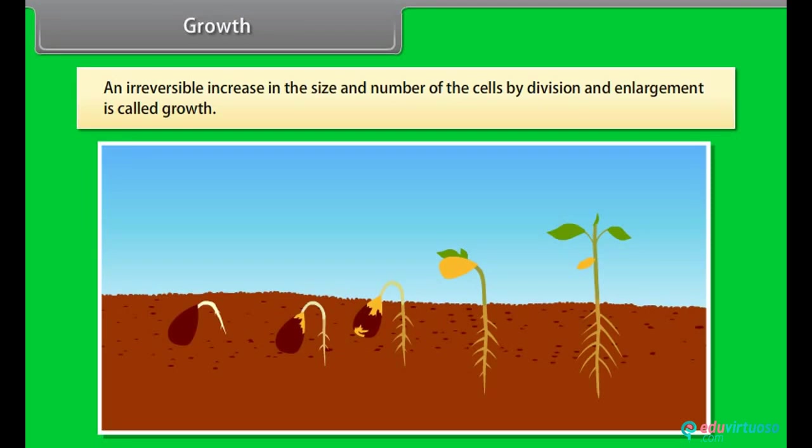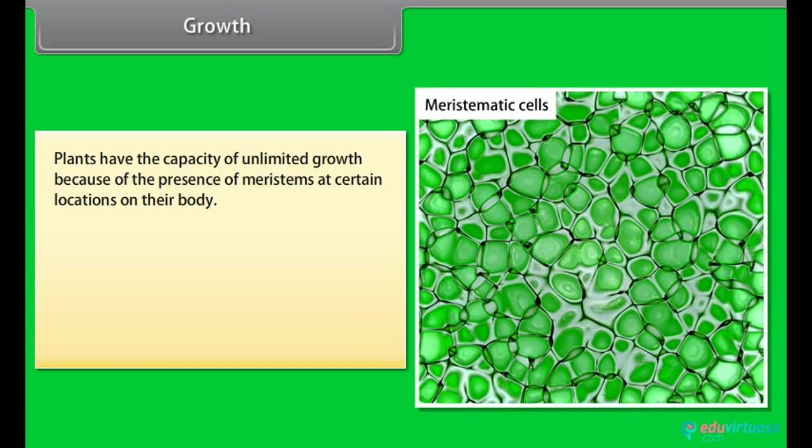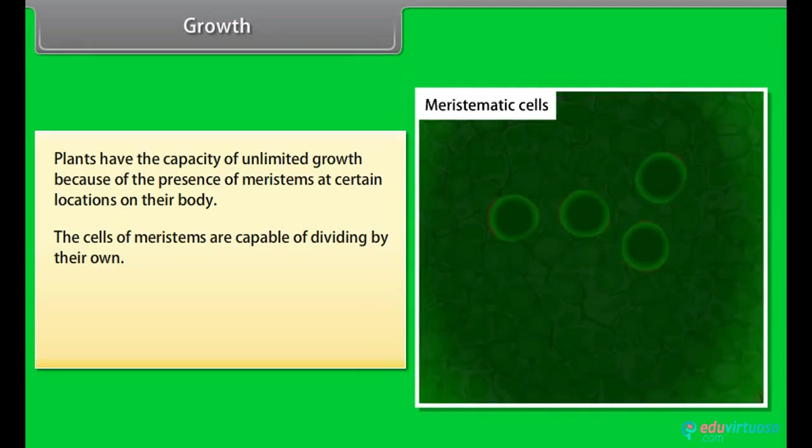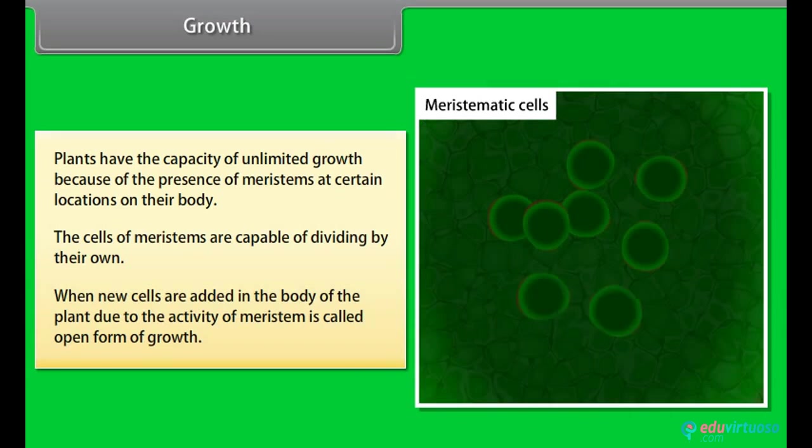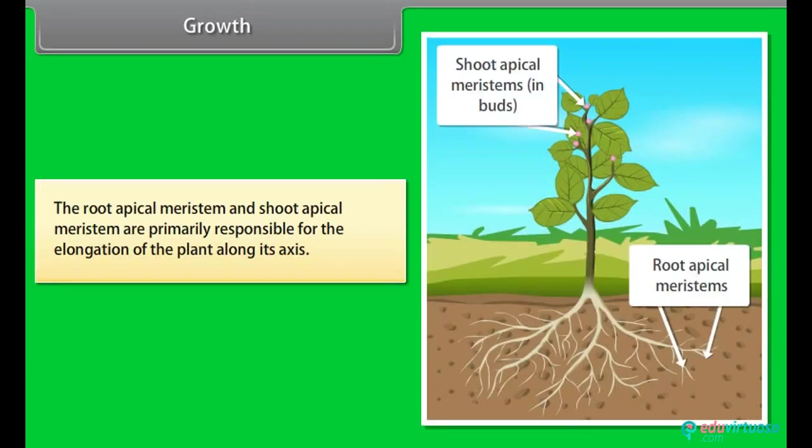Growth. An irreversible increase in the size and number of the cells by division and enlargement is called growth. In plants, the growth generally is indeterminate. Plants have the capacity of unlimited growth because of the presence of meristems at certain locations on their body. The cells of meristems are capable of dividing by their own. When new cells are added in the body of the plant due to the activity of meristem, it is called open form of growth.